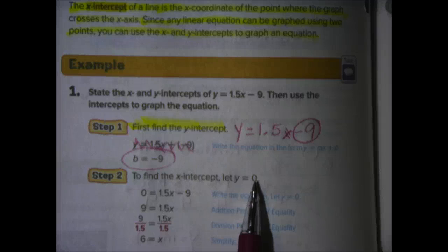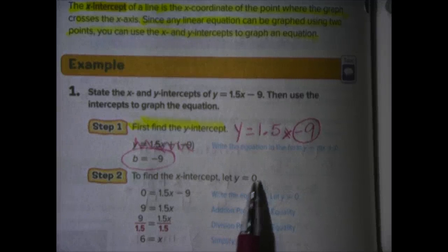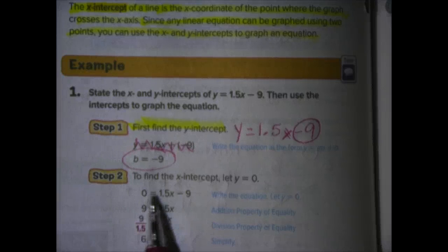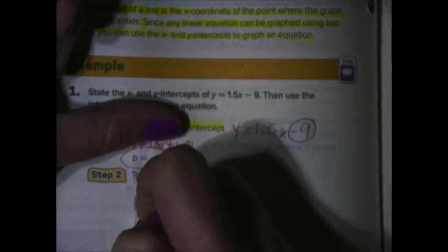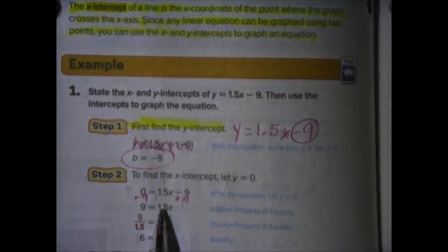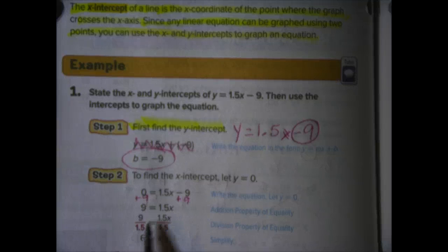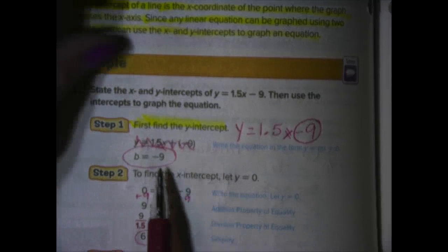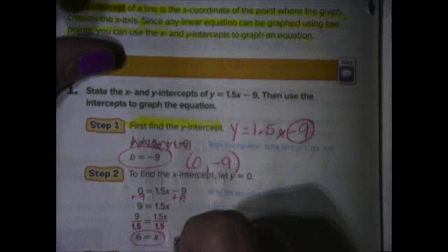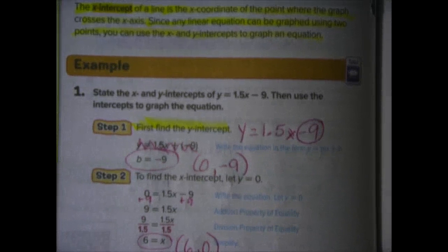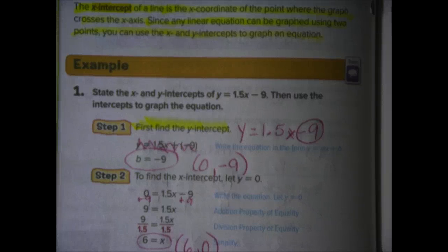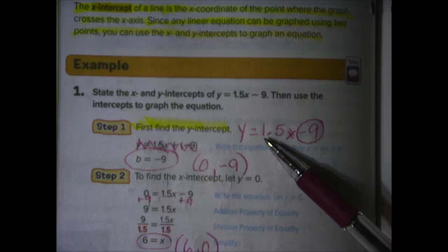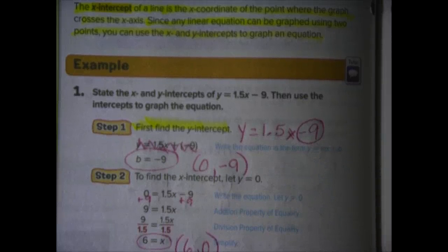To find the X-intercept, we're going to let Y equal 0. So, we're going to say, instead of Y here, we're going to write 0 equals 1.5X minus 9. And we're going to get 1.5X by itself by adding 9 to both sides. That leaves us with 9 equals 1.5X. So, we divide both sides by 1.5. And 9 divided by 1.5 is 6. You can use your calculator on this. So, our Y-intercept is 0, negative 9. And our X-intercept is 6, 0. So, if we graph them, 0, negative 9, 6, 0, and we draw our line. Notice that our slope was positive, and our line slopes up to the right in a positive direction.